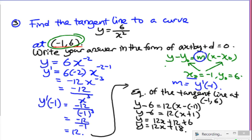But unfortunately, we need to check the question. The question says I have to put it into this particular form of ax plus by plus d. In this case, a, b, and d, the parameters are usually assumed to be integers. So I'm not quite finished. I need to do the next step, which is 12x minus y plus 18 equal to 0. That is a equal to 12, b equal to negative 1, and c is equal to 18.